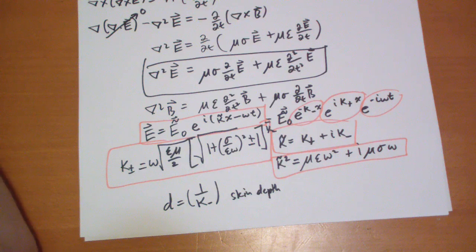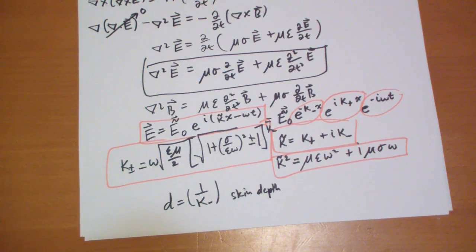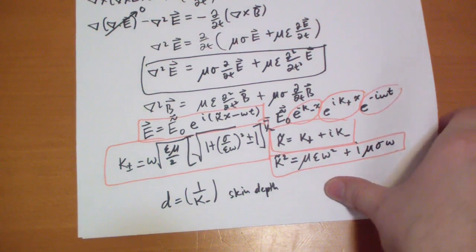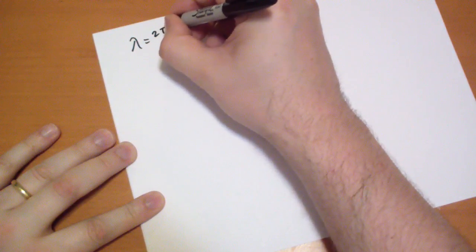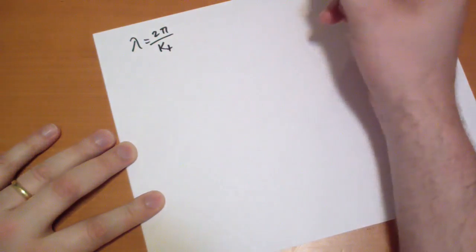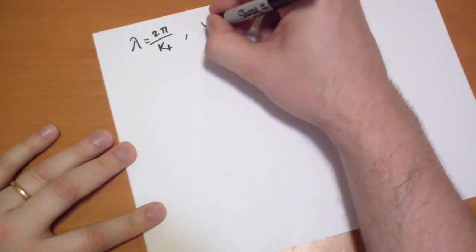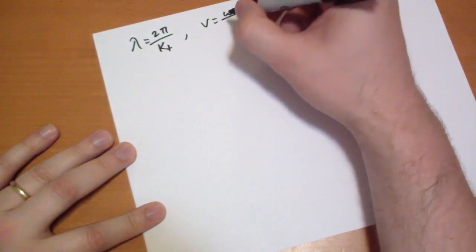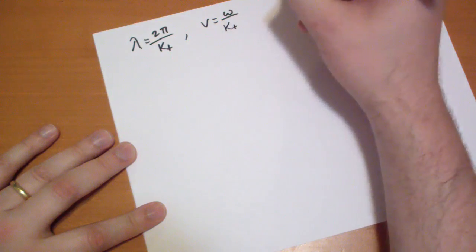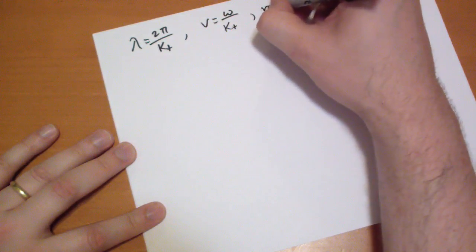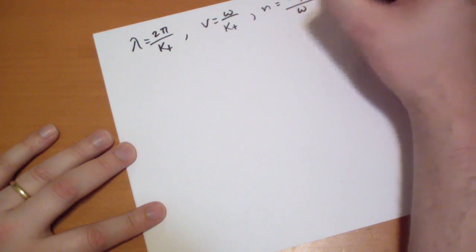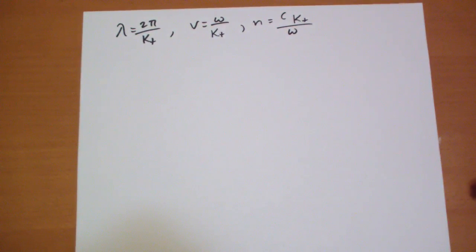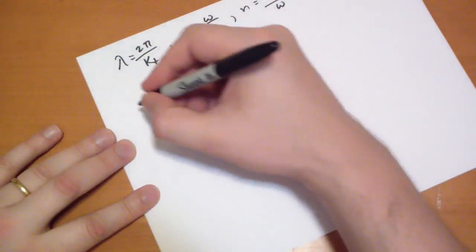We can calculate the propagation speed, the index of reflection, the normal way so our lambda wavelength is 2pi over the real part of the kappa our velocity is omega divided by kappa the real part and n is just the speed of light times kappa the real part of kappa times omega omega okay for a poor conductor